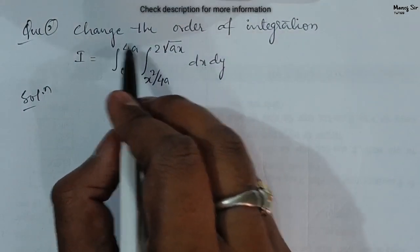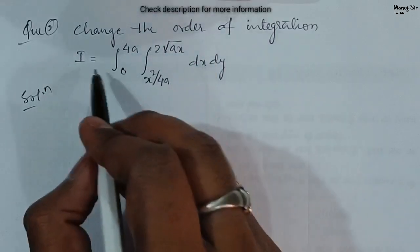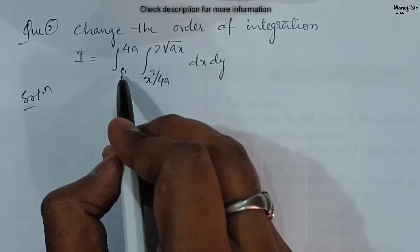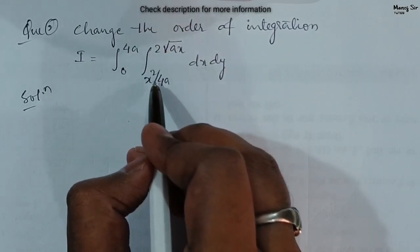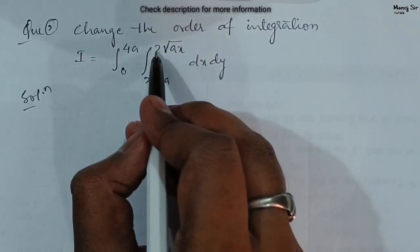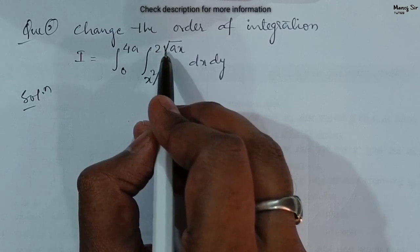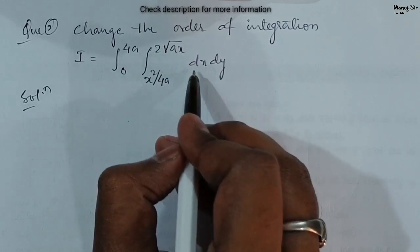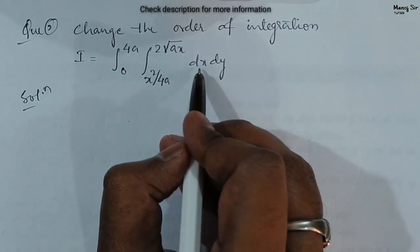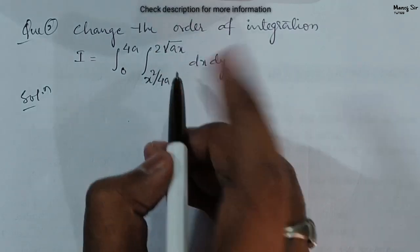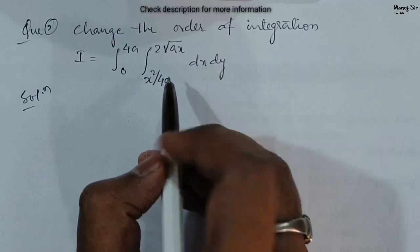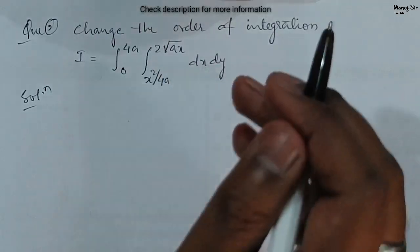The question is: change the order of integration. I equals integration from 0 to 4a, integration from x² / 4a to 2√(ax). The order of integration is dx dy, and the function is 1.